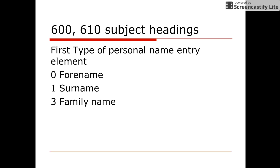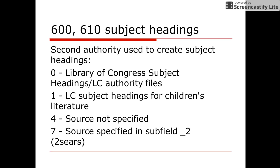In the 600 and 610 subject headings, the first indicator type of personal name entry element is: 0 for forename, 1 for surname, and 3 for family name. In 600 and 610, the second indicator represents the authority used to create subject headings, using values 0, 1, 4, and 7.